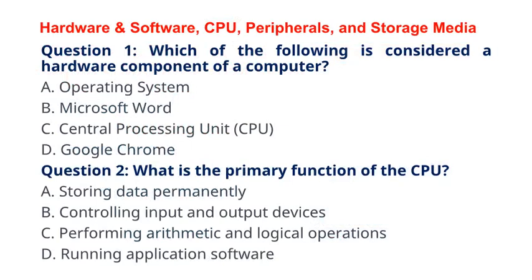Let us try to solve some important MCQs one by one from the topic. Question 1: Which of the following is considered a hardware component of a computer? A. Operating system, B. Microsoft Word, C. Central processing unit (CPU), D. Google Chrome. The correct answer to question 1 is option C: Central processing unit, CPU. Explanation: The CPU is a hardware component responsible for executing instructions and performing calculations in a computer.